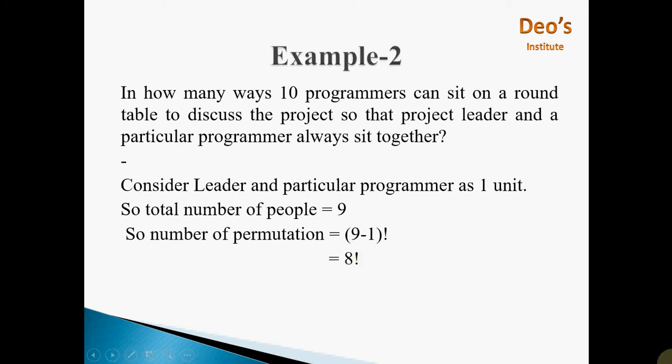You may wonder: shouldn't those two persons — the leader and the particular programmer — be arranged among themselves in 2! ways? However, since the arrangement is in circular order, arranging 2 persons in a circle gives (2-1)! = 1! = 1, which is just 1. So that factor is neglected, and the total number of permutations remains (9-1)! = 8!.